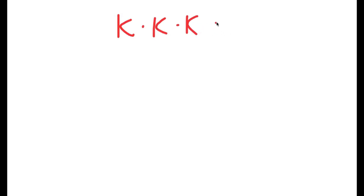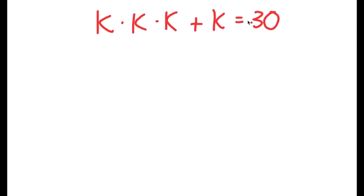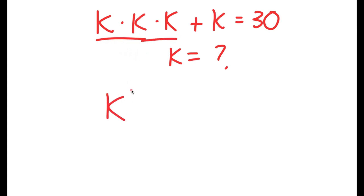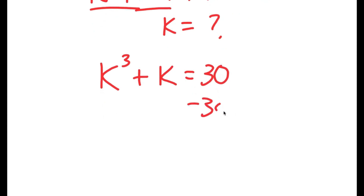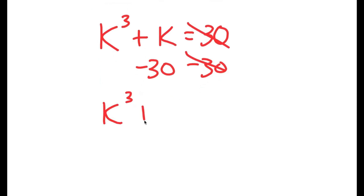Alright, so in this video I'm going to solve the equation k times k times k plus k is equal to 30. Obviously, I want to find the value of k. To start off, k times k times k is the same thing as k to the power of 3. So I get k to the power of 3 plus k is equal to 30. And now I'm going to subtract 30 on both sides, so I get k to the power of 3 plus k minus 30 is equal to 0.